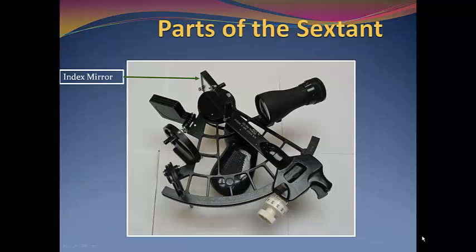The index mirror takes in the light of the celestial body and is reflected from this mirror down to the horizon mirror. The index filter is used to protect your eyes when observing the sun.